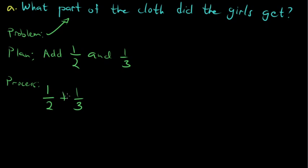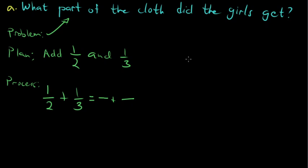Recall that we can only add or subtract fractions if they are similar, or if they have the same denominator. Unfortunately, in this problem the denominators are different — one is 2, the other is 3. Fortunately, we know how to add fractions even when the denominators don't match. The first thing to do is to look for the least common multiple of their denominators, because the goal is to rewrite them as two fractions with the same denominator. If you don't know how to do that, I suggest watching our other video on how to find the least common multiple.